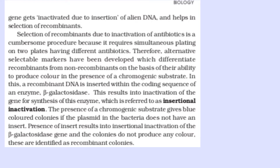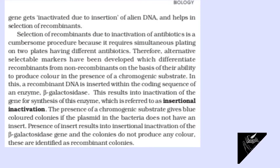Therefore, alternative selectable markers have been developed which differentiate recombinants from non-recombinants on the basis of the ability to produce color in the presence of a chromogenic substrate. In this approach, a recombinant DNA is inserted within the coding sequence of the enzyme beta-galactosidase, resulting in inactivation of the enzyme, referred to as insertional inactivation. The presence of a chromogenic substrate gives blue-colored colonies if the plasmid does not have an insert, whereas presence of an insert results in insertional inactivation of beta-galactosidase and the colonies do not produce any color. These are identified as recombinant colonies.